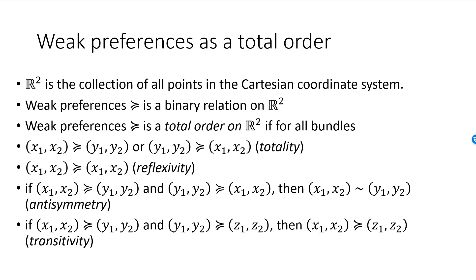From now on it will always be assumed that the weak preference relation is a total order satisfying these four conditions. We will say that preferences are totally ordered if this is the case.